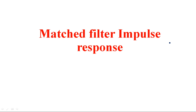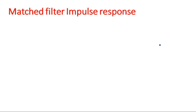In this video I will explain the impulse response of the matched filter. In the previous video we studied the frequency response characteristics of the matched filter, H(F). H(F) is the frequency response of the matched filter, and this frequency response maximizes the signal-to-noise ratio of the received signal. That is why the matched filter has the highest impact on receiver signal technology — it improves the signal-to-noise ratio.